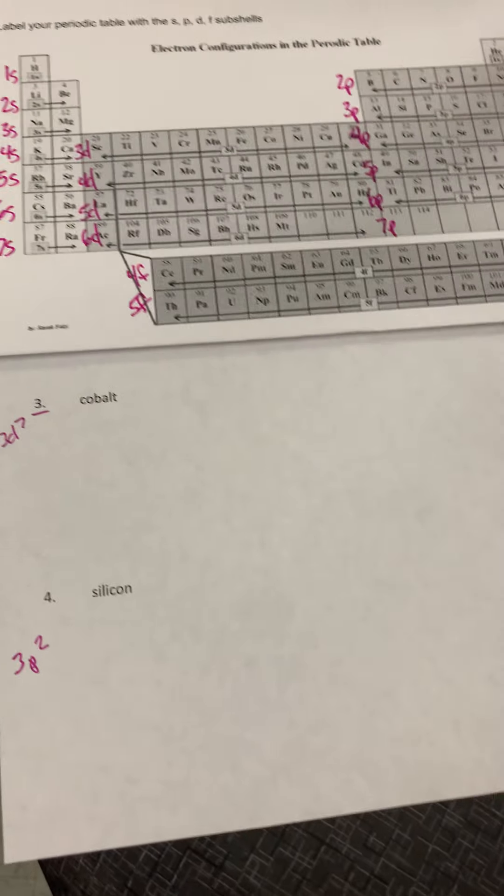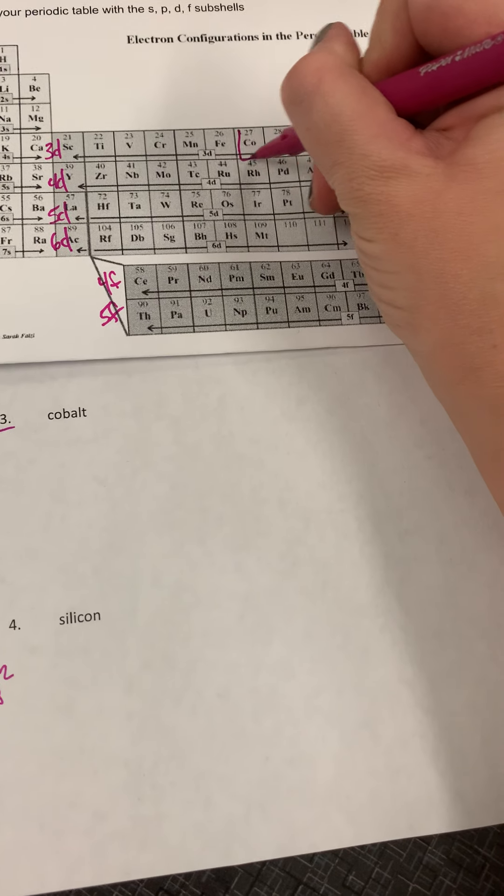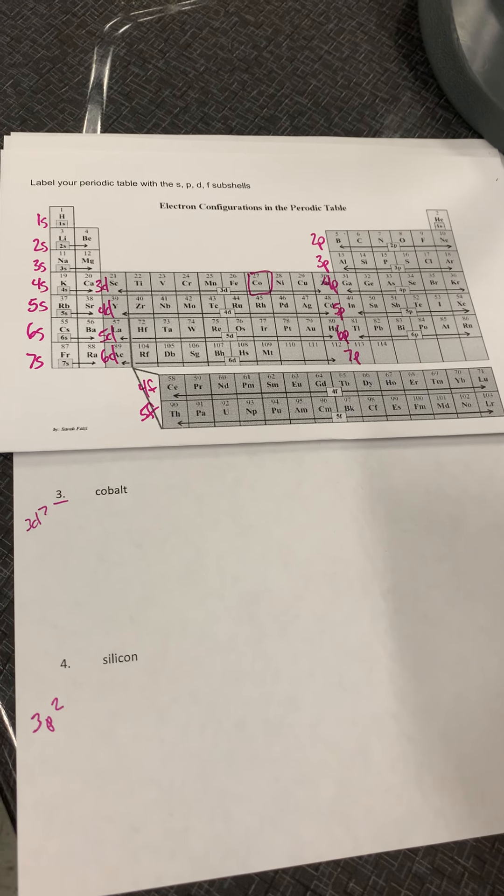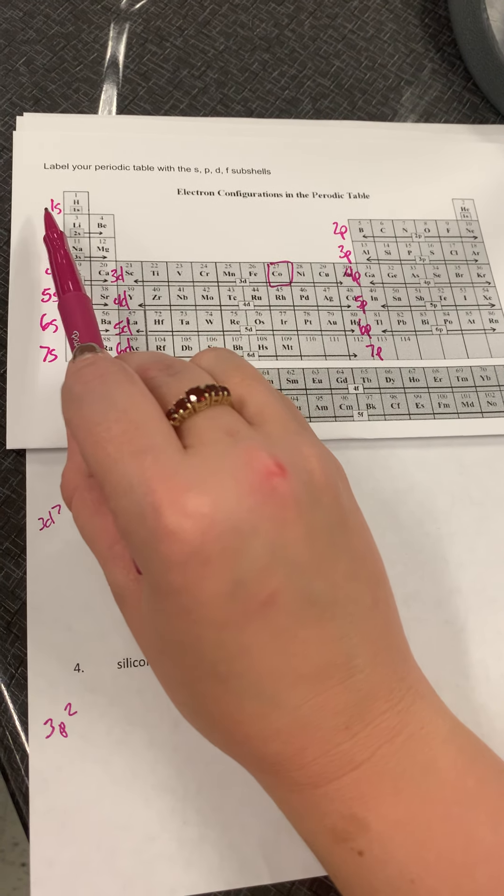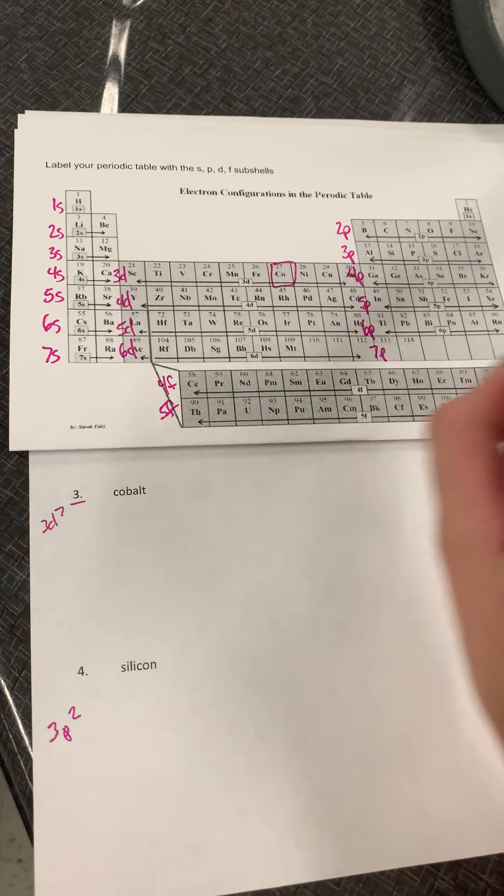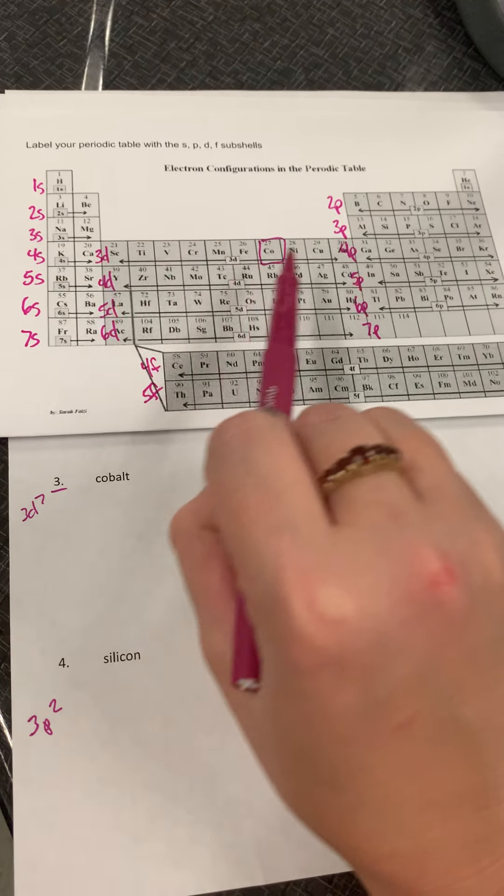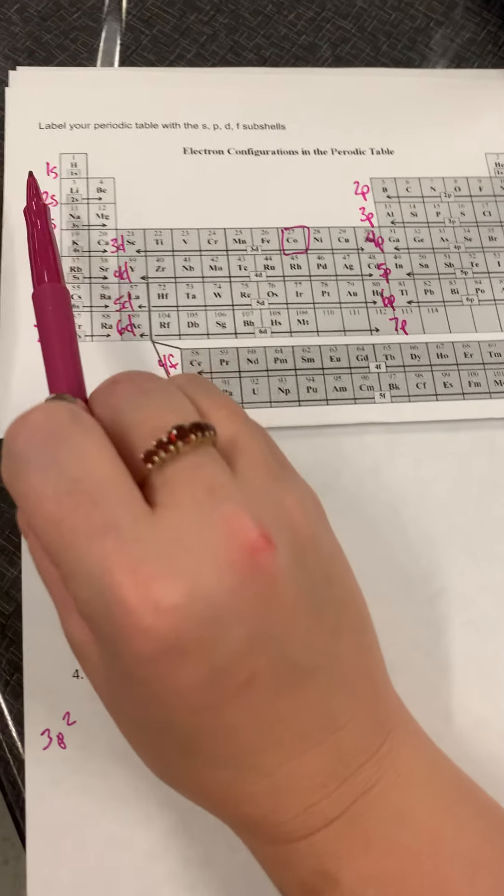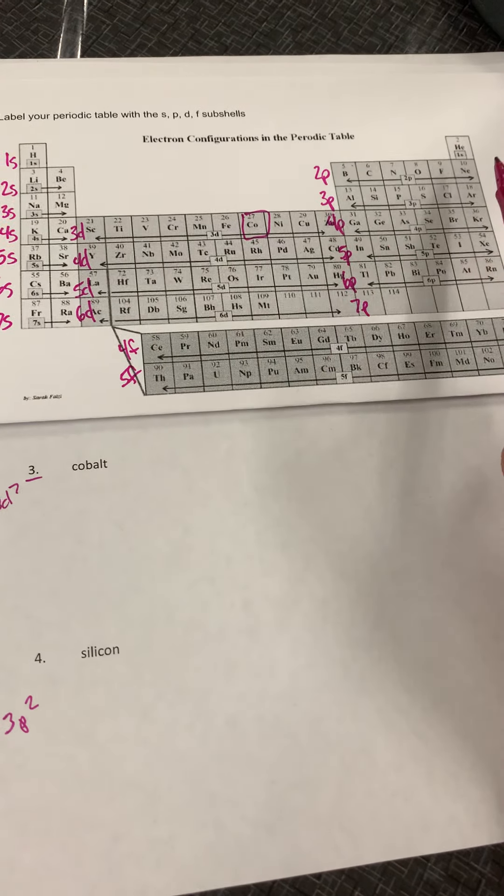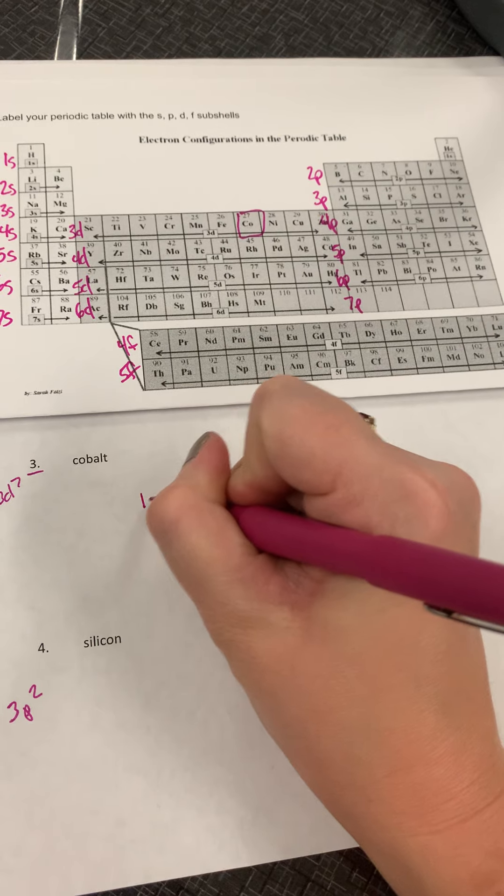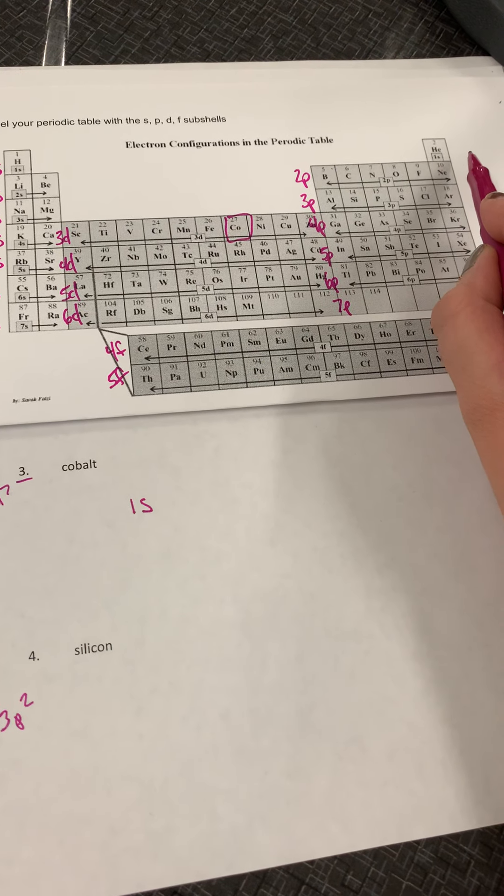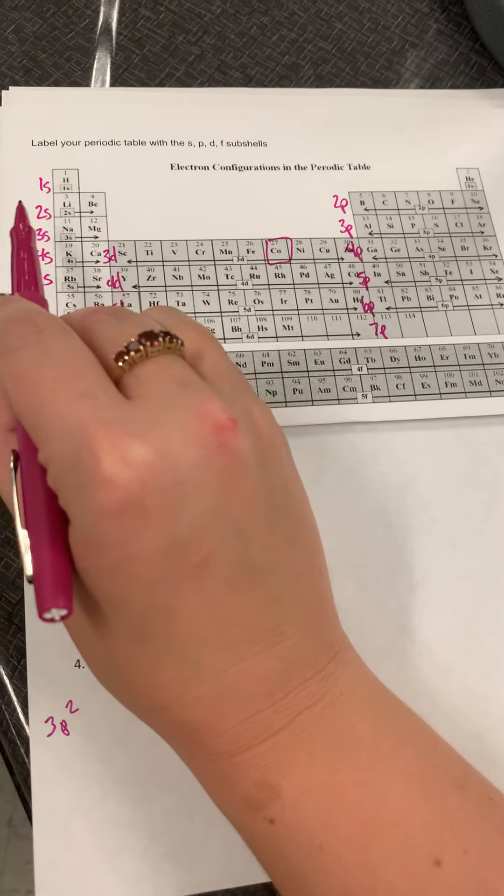I'm going to do cobalt and silicon just kind of as a review. I know some of you made it here yesterday, but some of you weren't here yesterday, and some of you didn't get it correct. So cobalt is right here. Everything that my finger touches, I need to write down. And I always start at 1s and fill them until I hit the element I'm looking for, which in this case is cobalt. So I'm going to start at 1s.